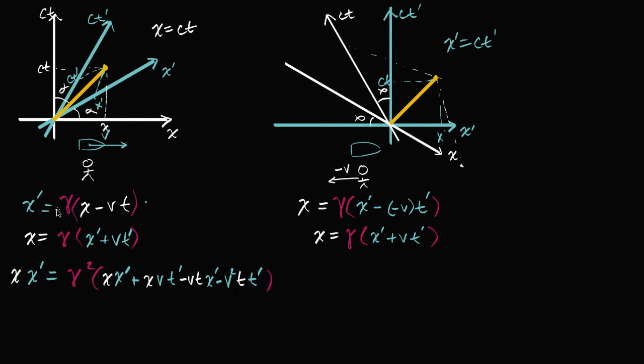And if gamma's gonna hold for any transformations between events, between x and x prime and t and t prime, it should definitely hold for this particular event. And so maybe we could use this to substitute back in and solve for gamma. So that's exactly what we're gonna do right now.